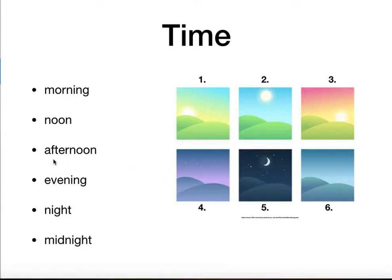Point to afternoon. If you pointed to number three, you are correct. Afternoon is any time after noon — so after 12 o'clock. Afternoon is 1 o'clock, 2 o'clock, 3 o'clock, even 4 o'clock, and that's p.m. What do you do in the afternoon? Maybe you go to English class or pick up your children from school.